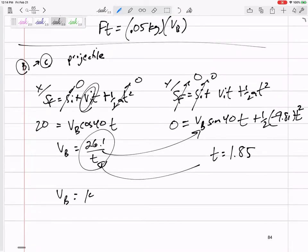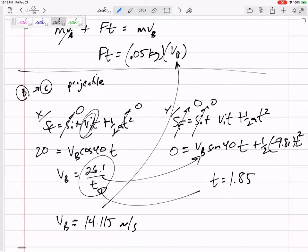The initial velocity for the projectile is the final velocity for the momentum. This has direction though. 0.05 times 14.115 - I could do this a number of ways, but it's at 40 degrees. I can break that up into cosine 40 and sine 40, but I think I'm just going to get the magnitude of the impulse.